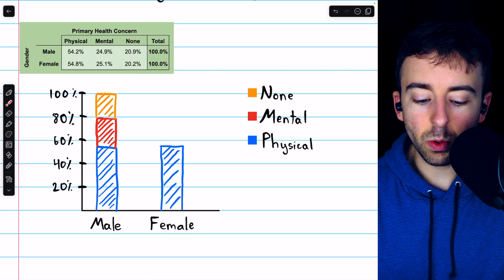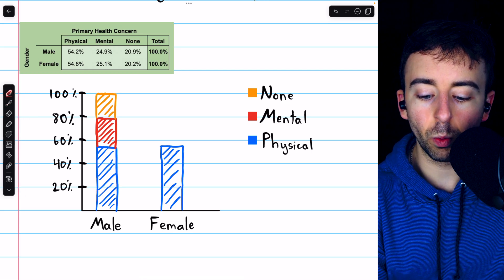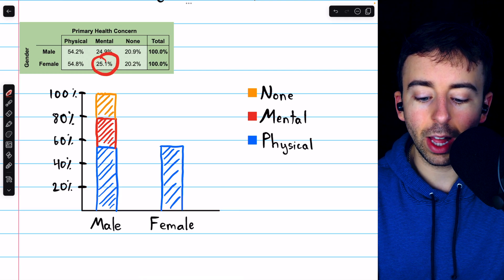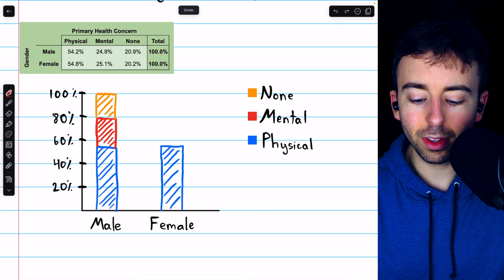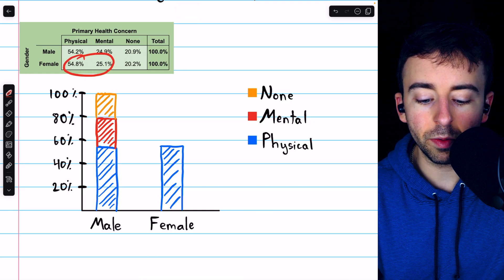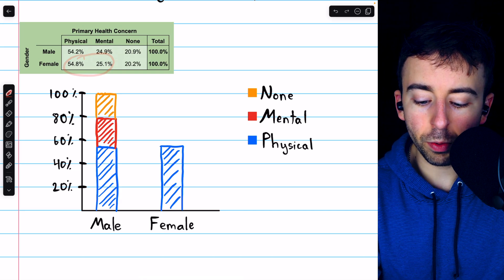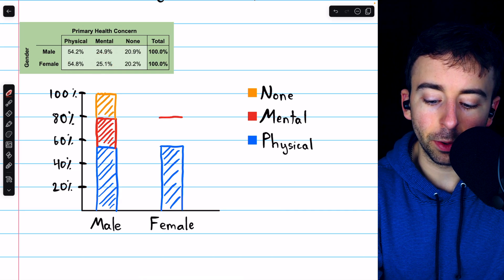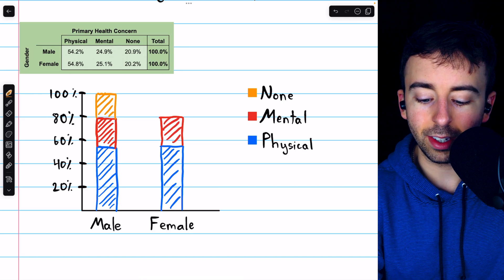We keep these widths equal. Continuing with the female bar here, we have that 25.1% of females said mental health concerns were their primary concerns, so we'll be going up to about the same place as with the males. 54.8 plus 25.1 is 79.9. So pretty much right on the 80% line. And again, I will shade this in red.